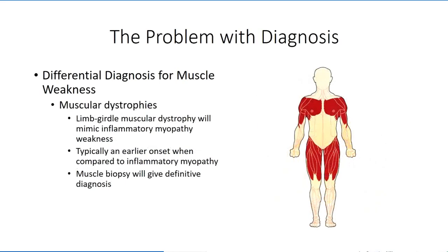The presentation pattern for inflammatory myopathies closely resembles another condition we have previously talked about — Limb-girdle muscular dystrophy — in that both conditions affect the proximal musculature of both upper and lower appendages. One distinguishing feature is the later onset of symptoms in patients with an inflammatory myopathy. Muscle biopsies will generally be taken, in particular if diagnosis is not fully confirmed, which will allow for a definitive diagnosis.